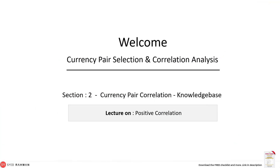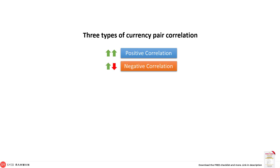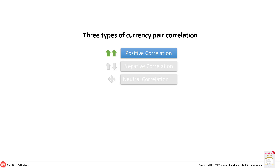Hello traders, welcome back. In the previous lecture, I discussed the basics of the correlation of currencies and currency pairs. In that lecture, I told you that there are three kinds of major correlation that can be found with currency pairs: positive correlation, negative correlation, and neutral correlation. Now in this lecture today, I will explain the first type of currency pair correlation, which is positive correlation.